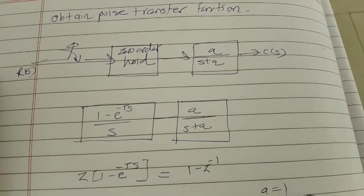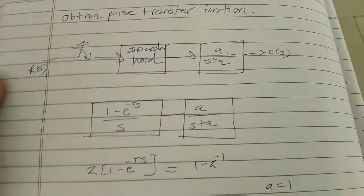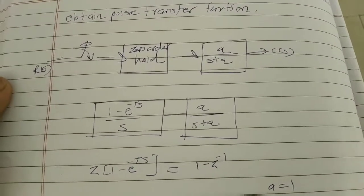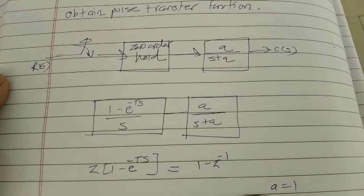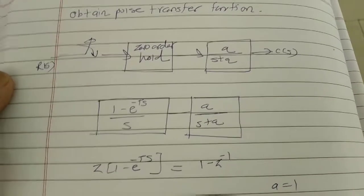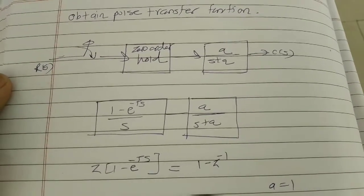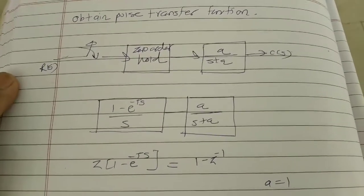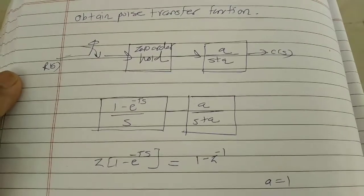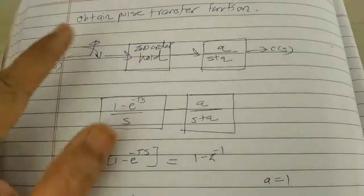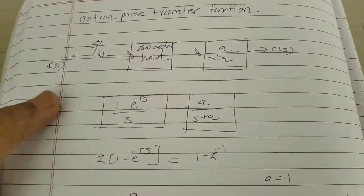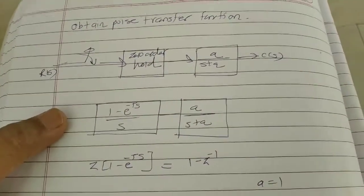Today we are going to study about digital control systems. In digital control systems, analog signals are converted to digital — for that, a sampler and sample-and-hold circuit is used.